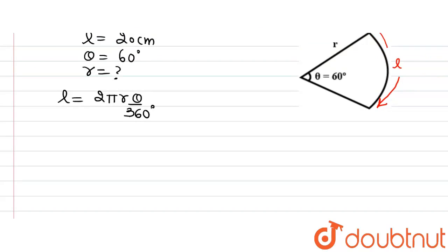we will get L, that is 20 cm, is equal to 2 multiplied by π multiplied by R. So, θ is 60 degrees divided by 360 degrees.